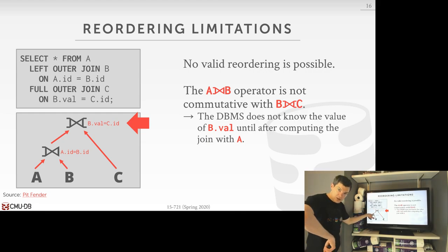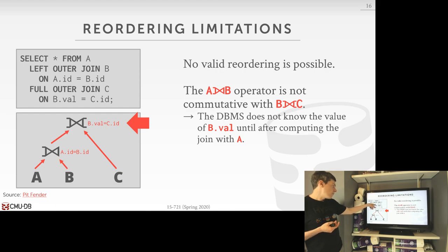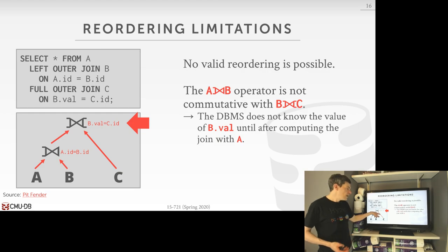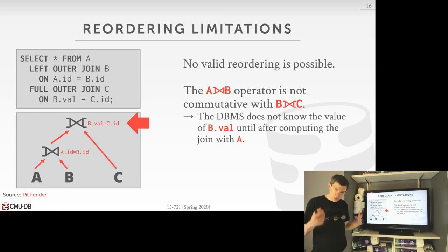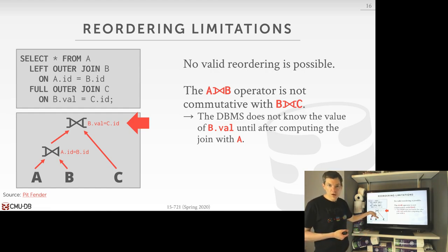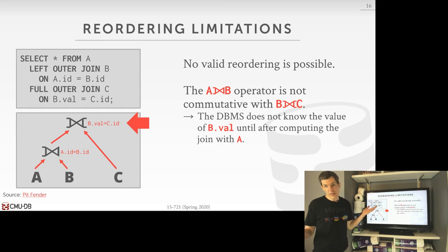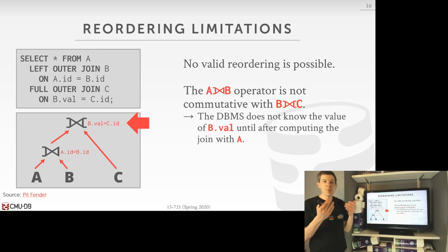I have to execute the left outer join on A and B first, because I don't know whether B.val is going to be a real value or null — since if A.ID doesn't match anything in B.ID, the B portion of the combined tuple will just be null. You need a mechanism when doing join reorderings to be mindful that there are cases where the reordering is invalid. I'm showing examples where we assume everything is commutative, but keep in mind there is additional logic needed to ensure we don't reorder things incorrectly.